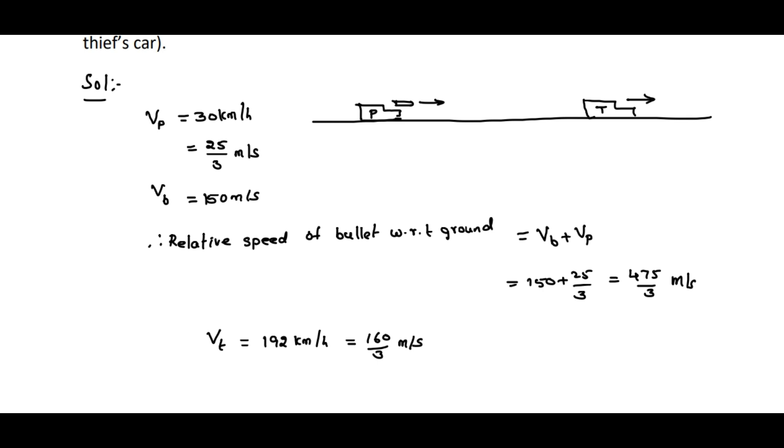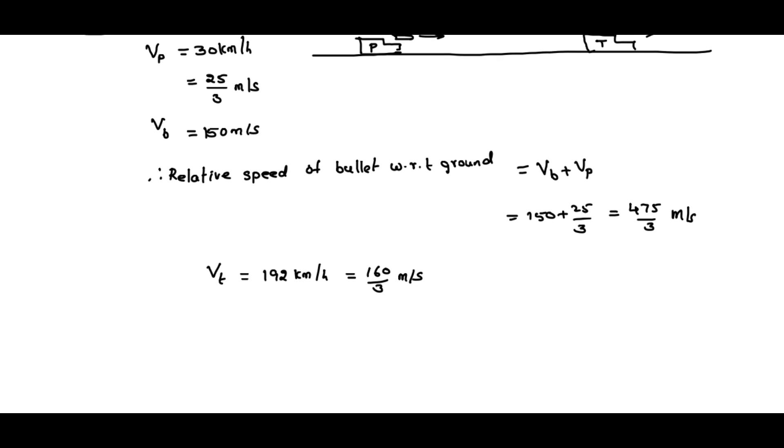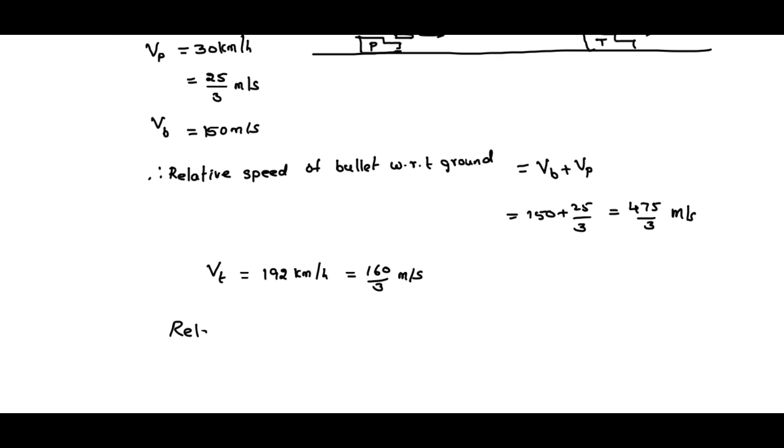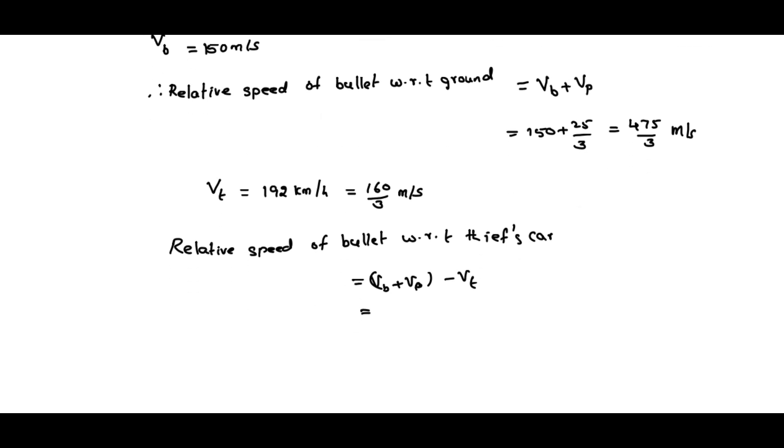Now if you observe the speed of the thief's car and relative speed of bullet, both are in the same direction. Then the relative speed becomes the relative speed of bullet with respect to thief's car. We can write Vb plus Vp minus Vt. That is equal to Vb plus Vp - previously we got it - that is 475 by 3 minus speed of thief's car, which is 160 divided by 3.